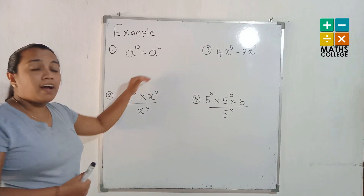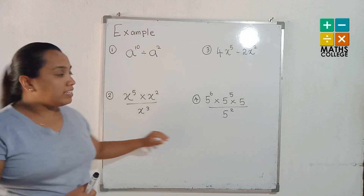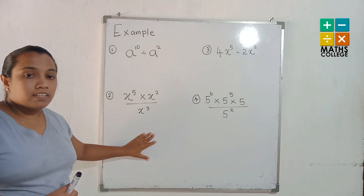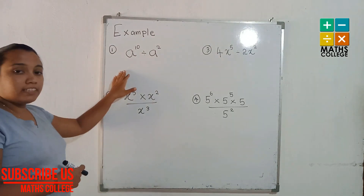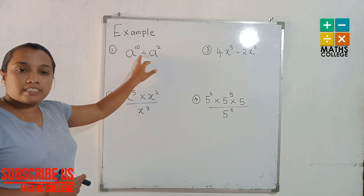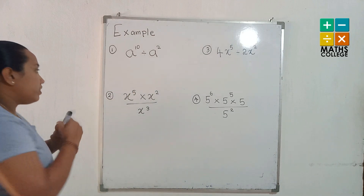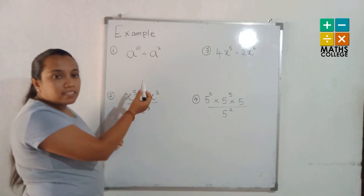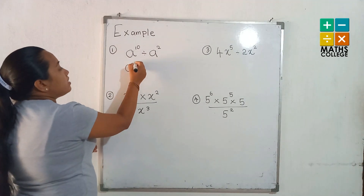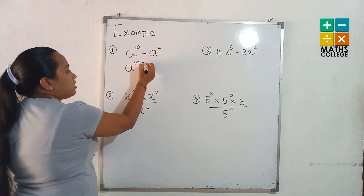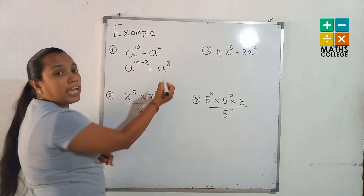Now I am ready to explain more examples of the division of powers with the same basis. The first one: a to the power 10 divided by a to the power 2. The given powers have the same basis — a is the base. Then, subtract 2 from 10. The answer is a to the power 8.